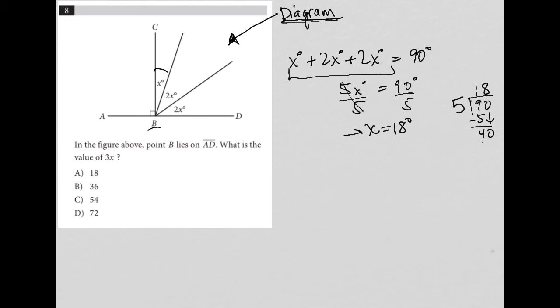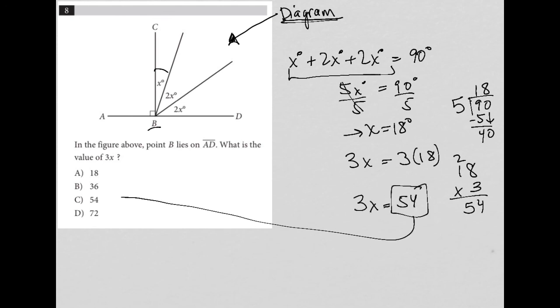Well, we know that x is equal to 18 degrees, so that means 3x is equal to 3 times 18 degrees. 3 times 18—again, not the calculator section, so maybe you know it by heart. If not, I'll show you how to do the math. 3 times 8 is 24, 3 times 1 is 3, plus 2 is 5. So 3x is equal to 54, and therefore the correct answer here is choice C.